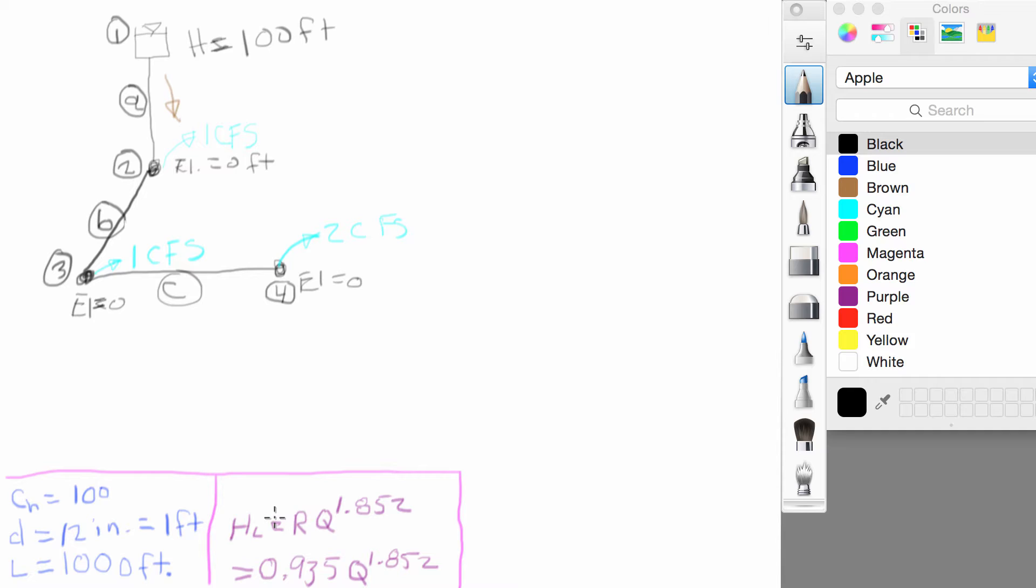And we also discussed the Hayes and Williams head loss equation for these particular units and the EPAnet resistance factor where those are combined at the beginning of the simulation and we found that for these values the simplified equation is 0.935 times flow in cubic feet per second raised to the 1.852 power.